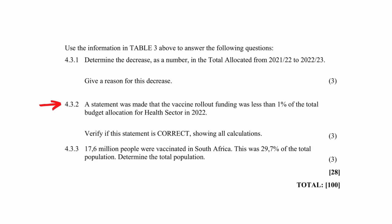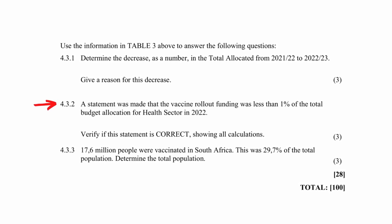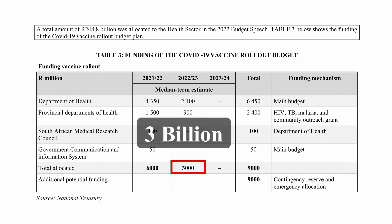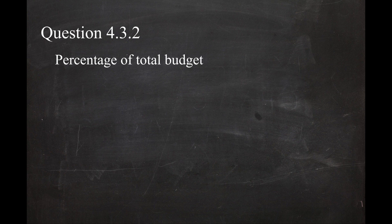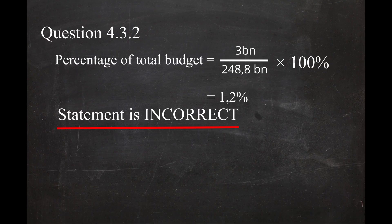In question 4.3.2, a statement was made that the vaccine rollout funding was less than one percent of the total budget allocation for the health sector in 2022. You have to verify if this statement is correct. The total allocated budget for the 2022 vaccine rollout was 3 billion rand. As a percentage of the total health sector allocation: 3 billion divided by 248.8 billion multiplied by 100 gives 1.2 percent. Since 1.2 percent is more than one percent, the statement is incorrect — not stating this will lose you a mark.